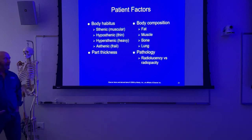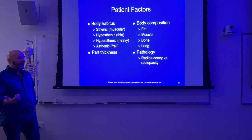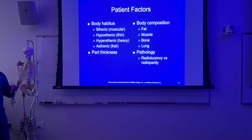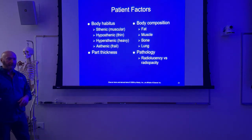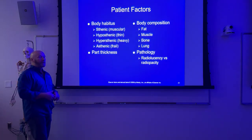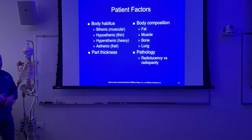We have four basic body habitus: sthenic - which is large average, muscular; hyposthenic - which has kind of a runner's build, a thinner average; and then the two extremes - hypersthenic and asthenic. Each one carries different potential imaging considerations - not just technique, but also patient positioning. We just came through GI, and there are implications for centering with different body habitus as well.